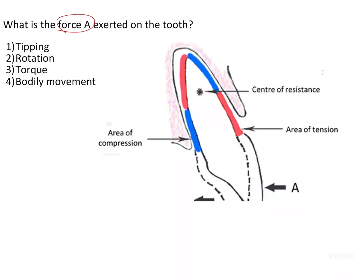What is the force A that is being exerted on the tooth? Here in this image we can see that force A is being applied onto the buccal surfaces of the crown of this tooth. We have been asked to identify the type of tooth movement expected with this type of force — whether it is tipping, rotation, torquing, or bodily movement.